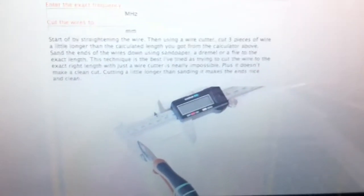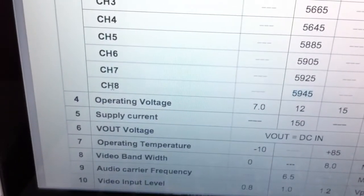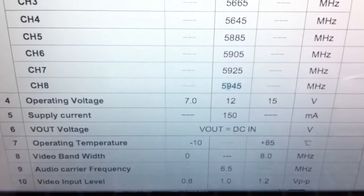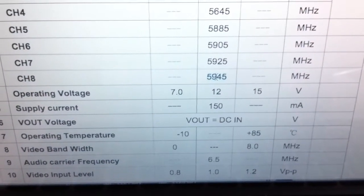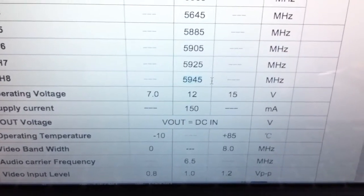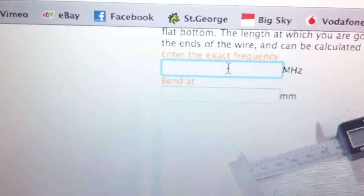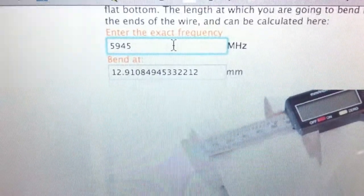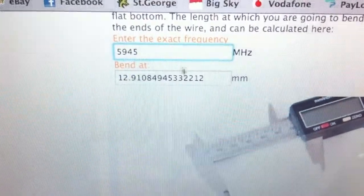Now what we're doing is building a 5.8 GHz antenna in this instance. So I'm going to be tuning mine to channel 8 and what I need is a frequency, which in this instance is going to be 5945 MHz. So what we need to do is enter this in two sections of David's website. In this instance, we're doing the actual bend, which is 12.9. But there's also another section that you will actually enter in the same number. And what it'll do is give you the length at which you need to cut the wire.